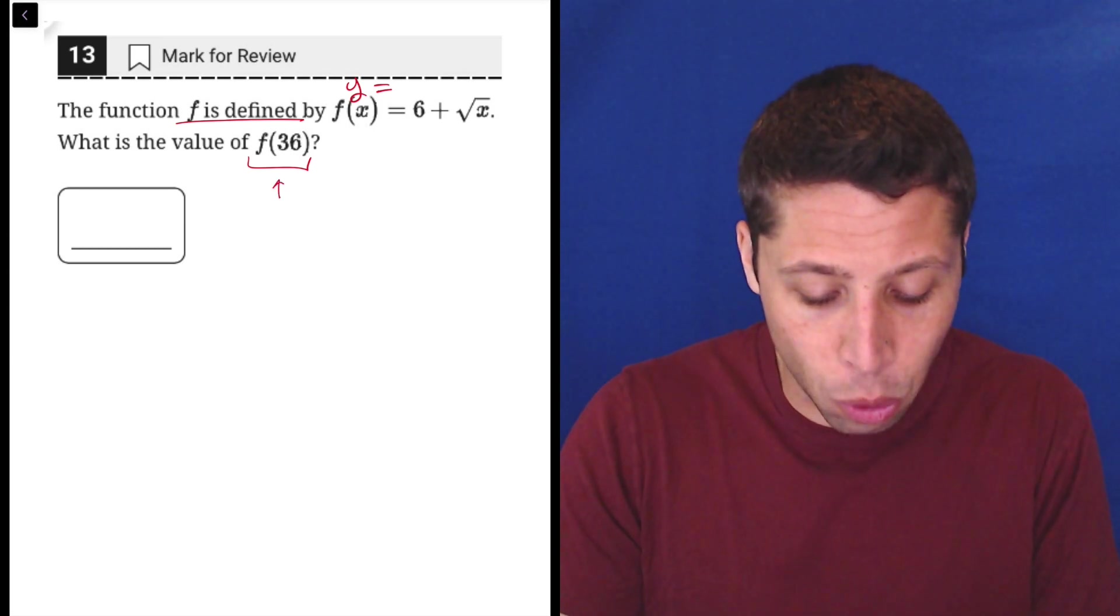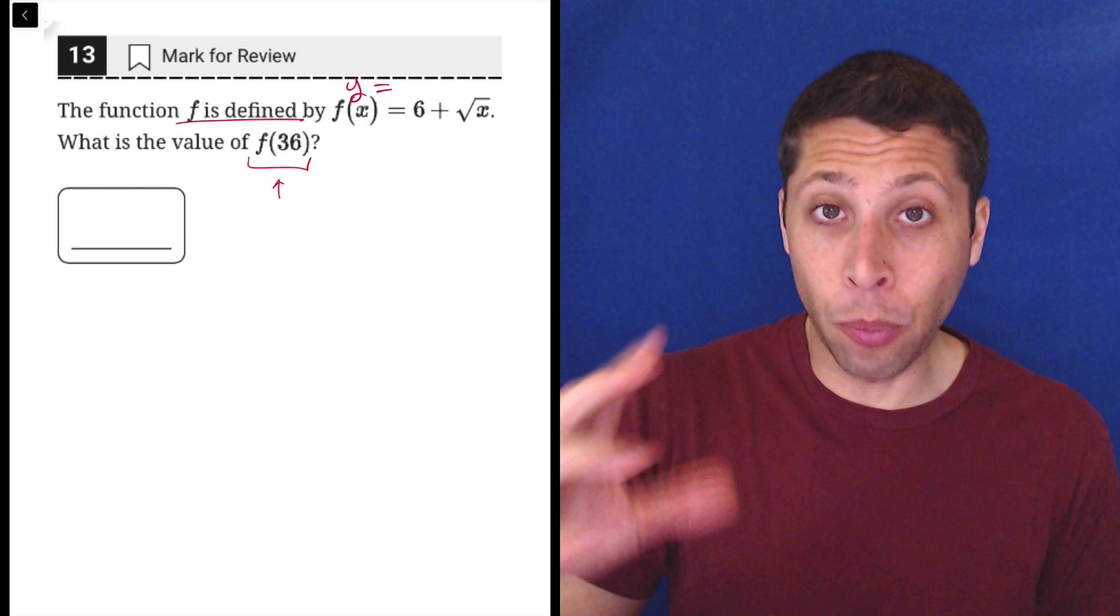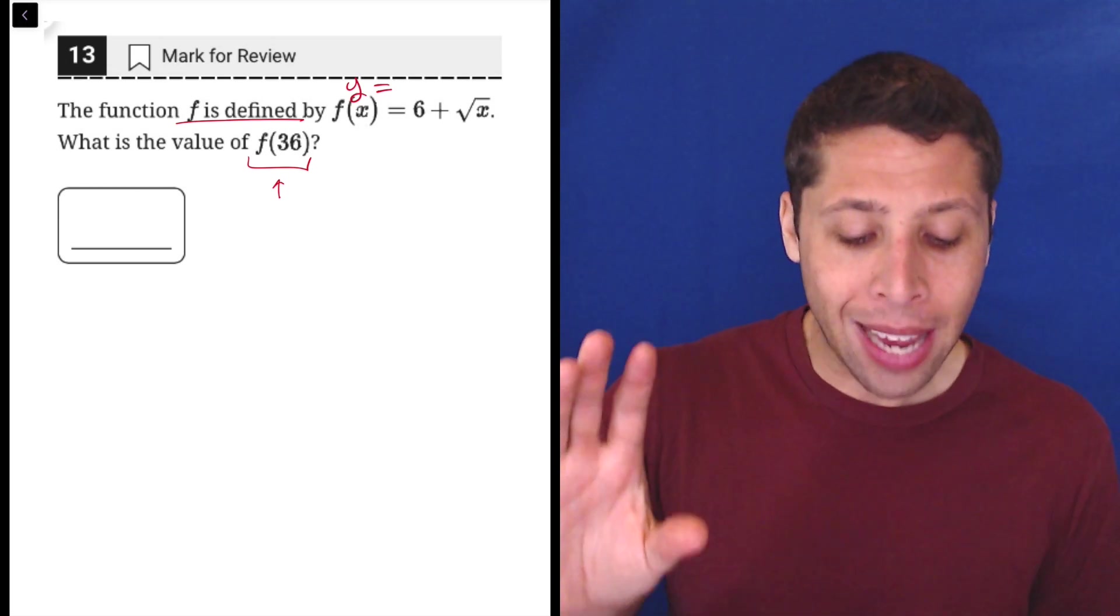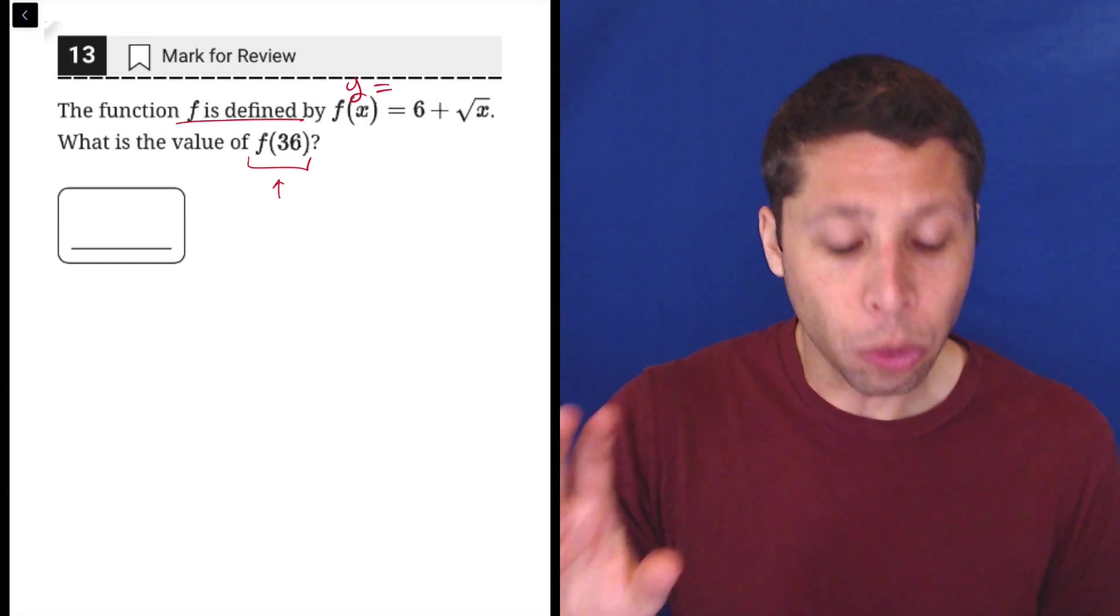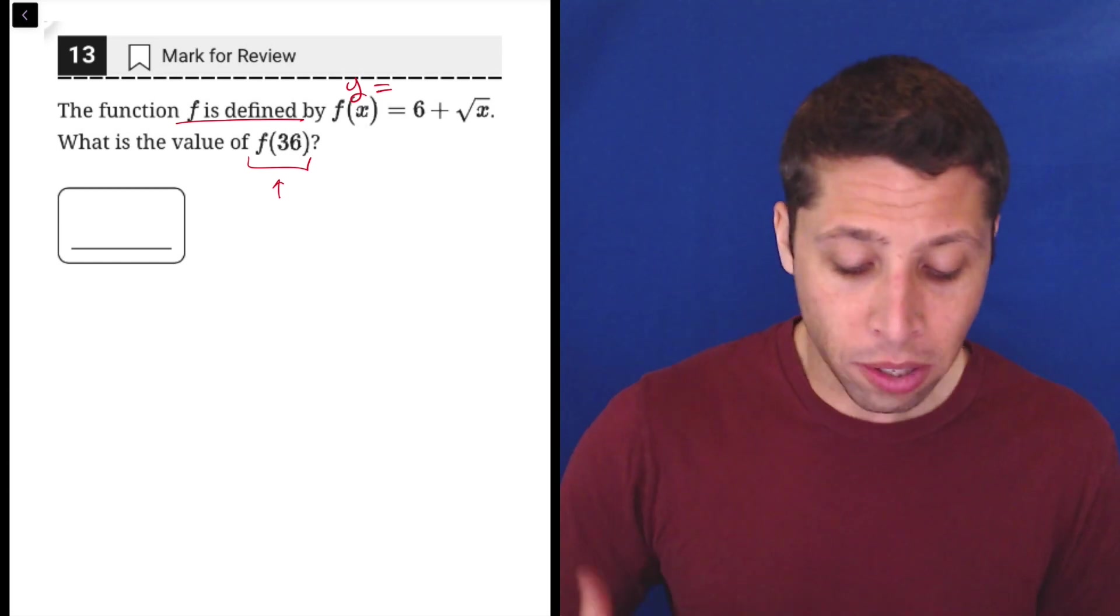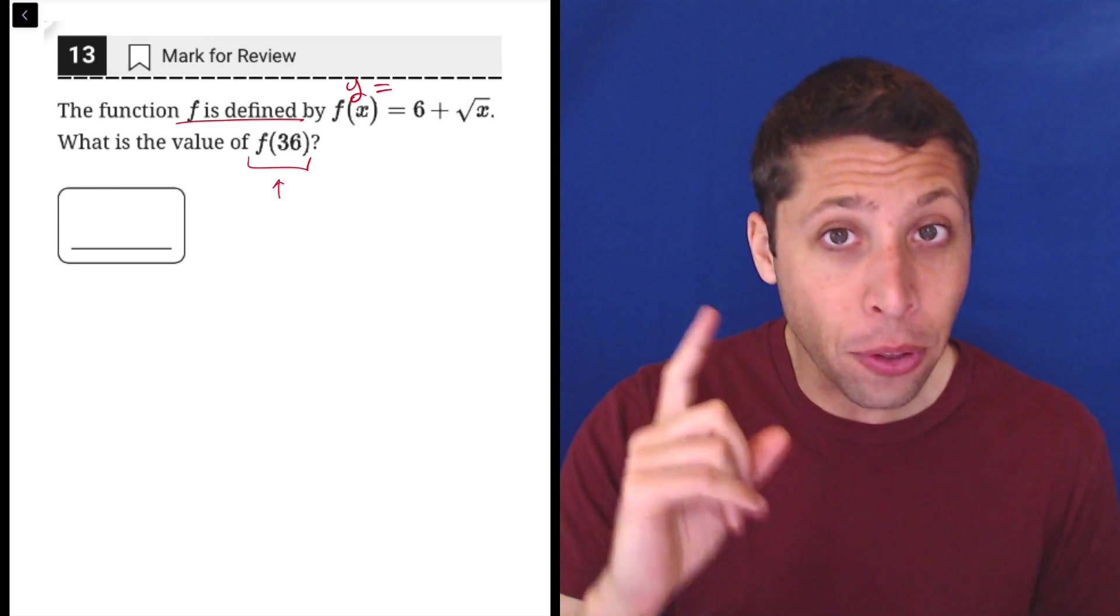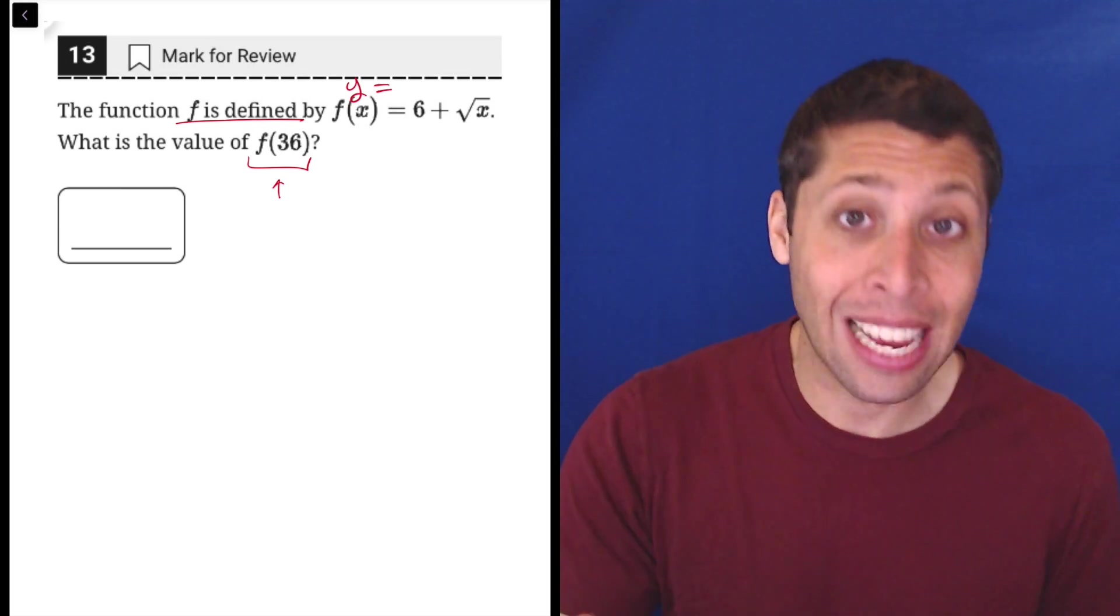What they're doing when they give us this question, the way we would read this is: the function f is defined by f of x equals 6 plus the square root of x. What is the value of f of 36? Notice f of 36. There's no 'of' written there, but that's how we say it.